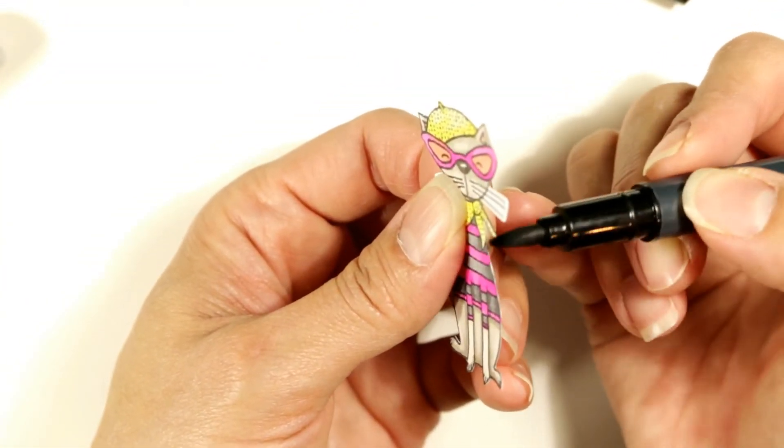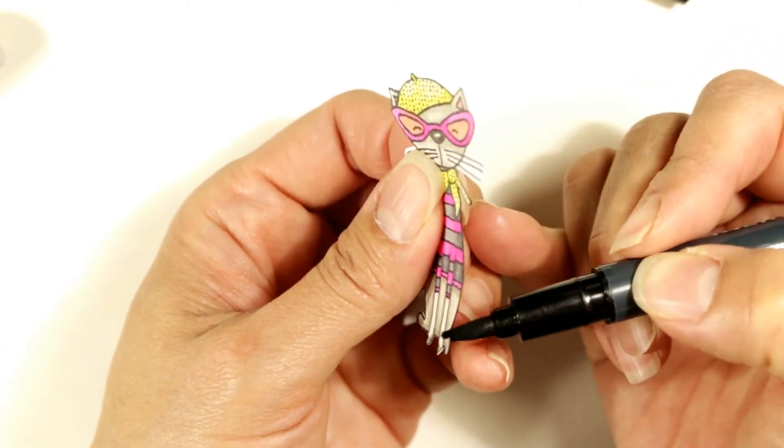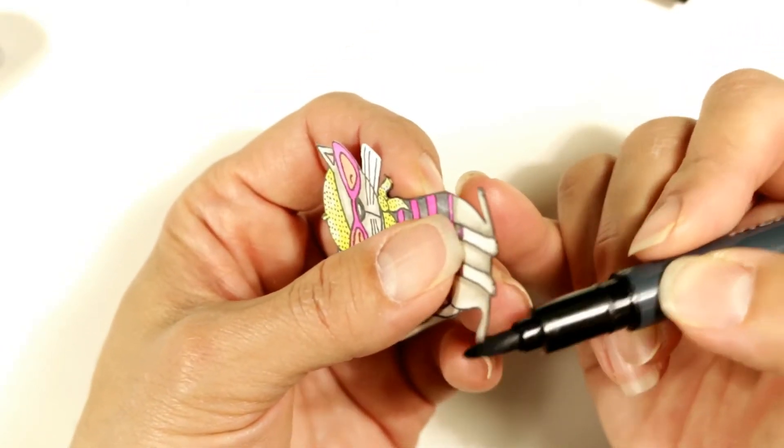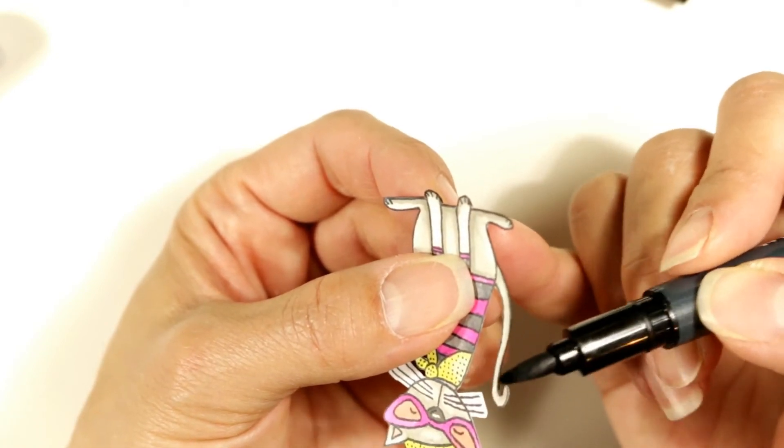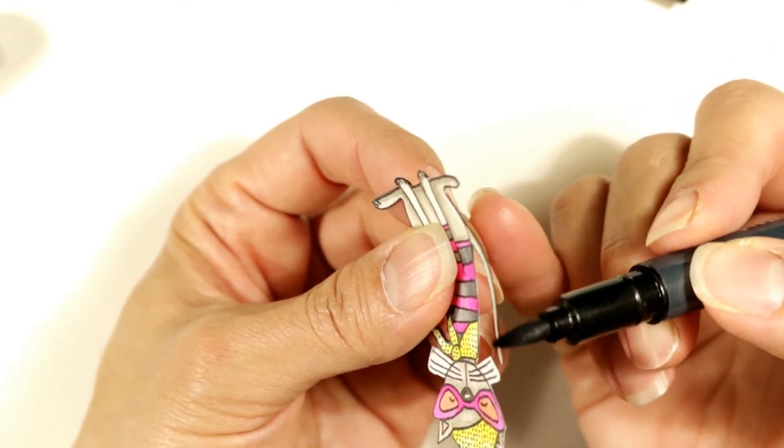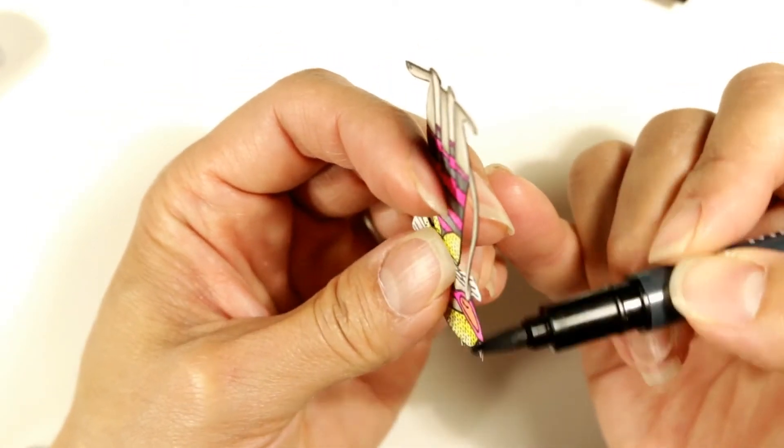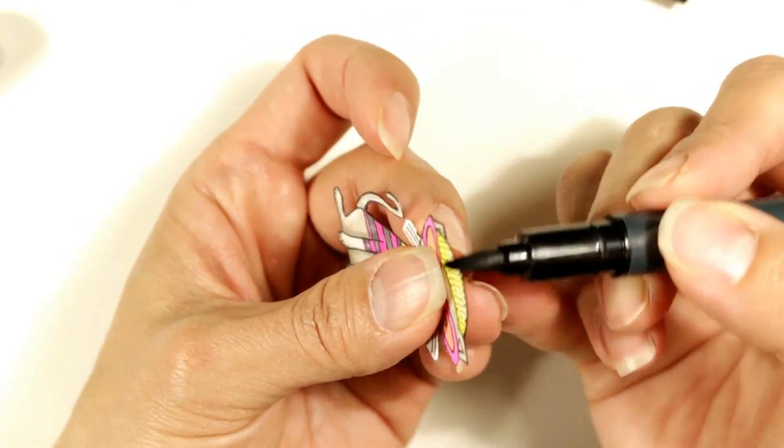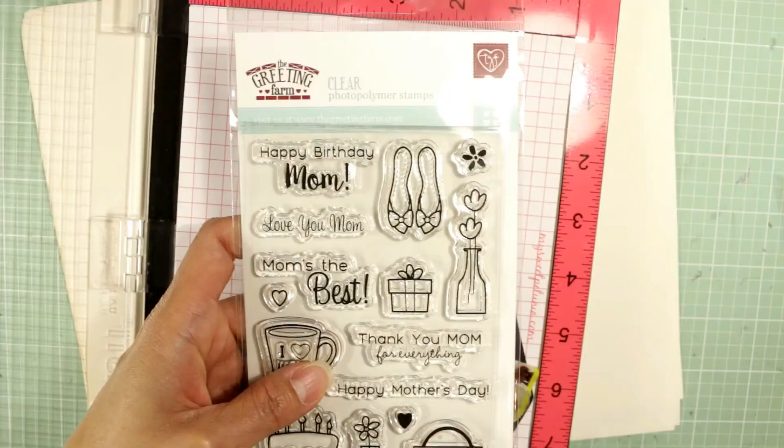I fussy cut the whole kitty out. And you can see the areas where the whiskers are, I just kind of cut around the whole bunch of them. But I wanted the edges of the kitty to not have that white edge of the paper showing. So I'm using a Memento Tuxedo Black marker and just inking the edges.